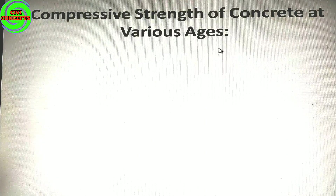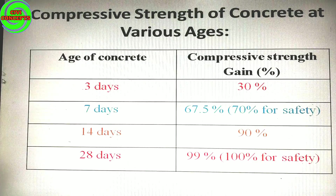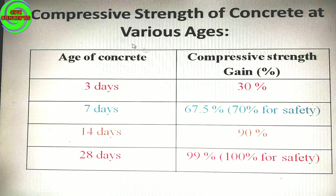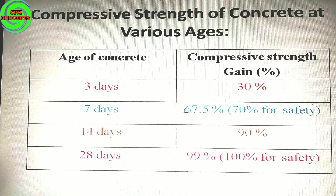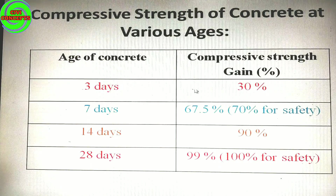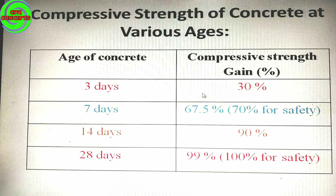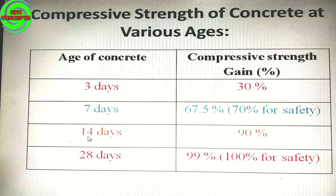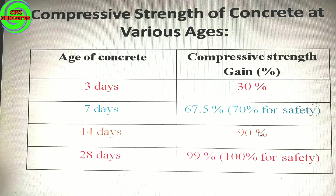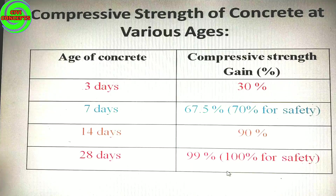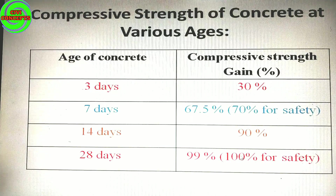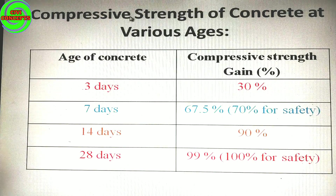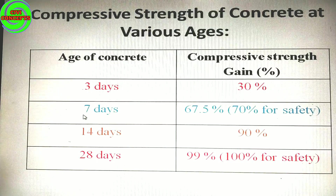Compressive strength of concrete at various ages — you must know this if you are working on site or checking cube testing reports. On 3 days of casting, concrete gains 30% strength. On 7 days it attains about 67.5%, considered 70% for safety. At 14 days it gains about 90% strength. On 28 days it attains 99%, which we consider as 100% for safety.